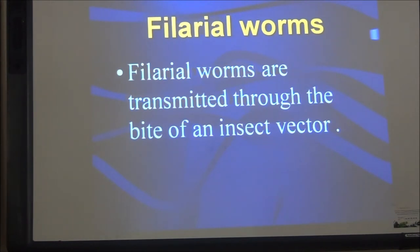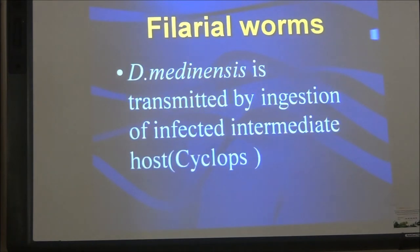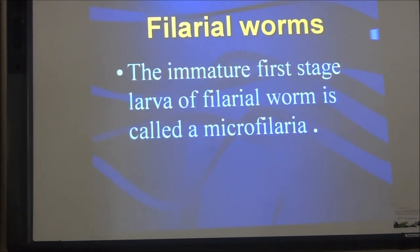Trichinella spiralis is transmitted by ingestion of larvae in infected tissue. Dracunculus medinensis is transmitted by ingestion of an infected intermediate host known as the cyclops. In filarial worms, the immature first stage larva is called microfilaria.